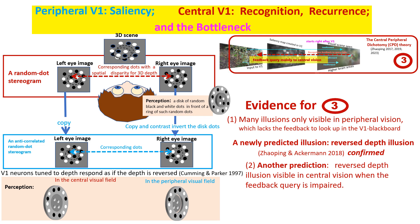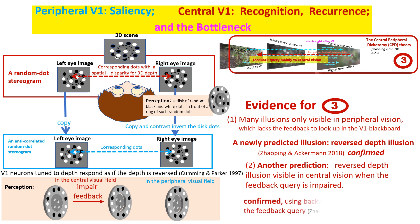A second prediction naturally follows: the reversed depth illusion should become visible in central vision when the feedback query is impaired, so that central vision also cannot query the V1 blackboard to veto the false report from depth-tuned V1 neurons. This prediction is confirmed. The feedback is compromised using a visual psychophysics trick of backward masking, which quickly removes the original visual inputs to make them unavailable for the feedback query. This is achieved by making the random dot stereogram dynamic, with a very short interval between successive frames.